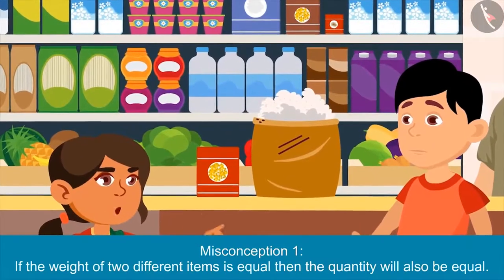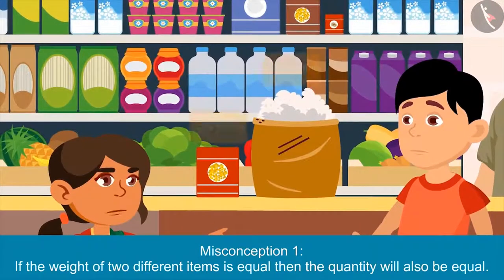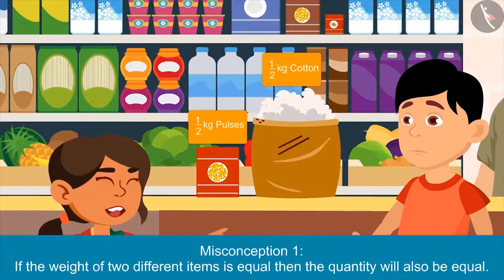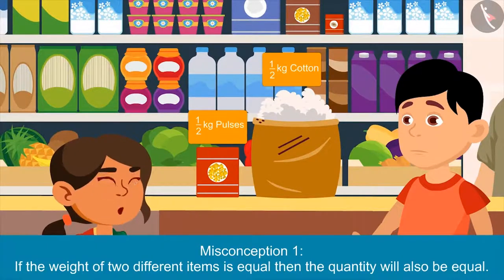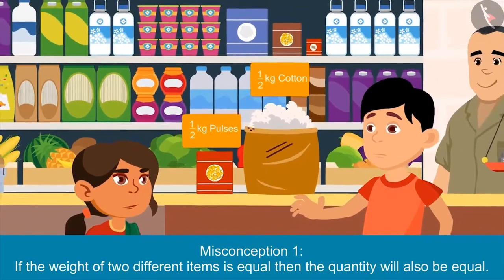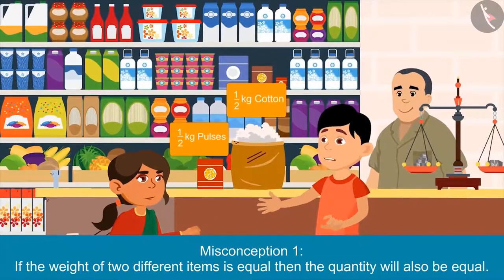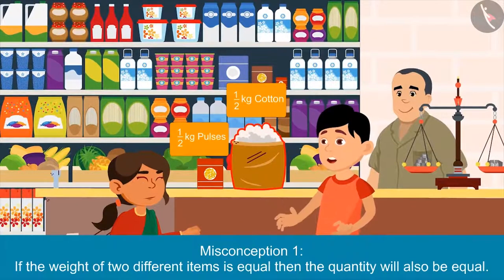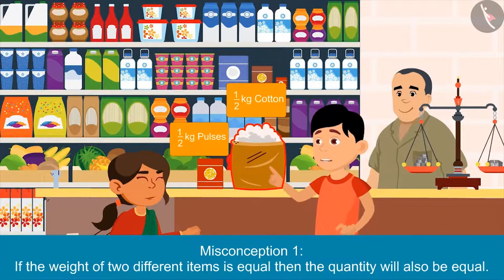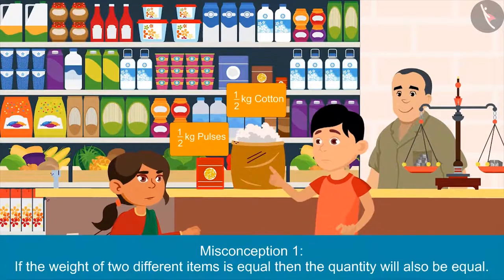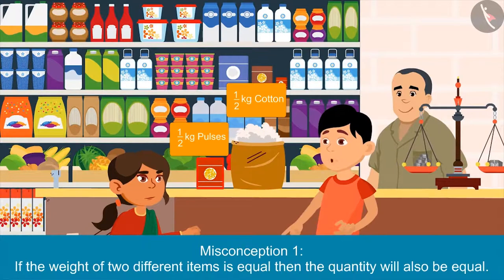Brother, look at these two bags. Both of them have half a kg written on it. But the quantity of cotton is much more than the quantity of pulses. Yes, Neetu, you are absolutely correct. How is it possible? This is because cotton is very light, so more amount of cotton is needed to make half a kg of it. Pulses are heavier than cotton, so a very less amount is enough to make half a kg.